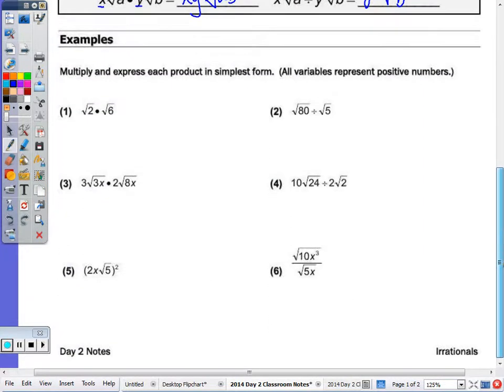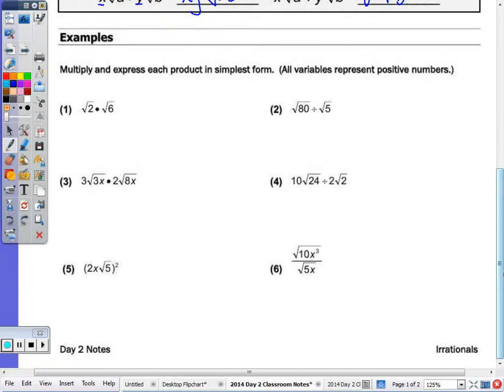The examples. For 1 through 12, we're going to multiply and express each in simplest form. On the back, starting with 10, we'll look at some division problems. So the direction should actually say multiply and divide, and express each of your answers in simplest form.